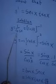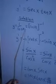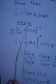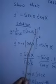1 over cos x can be written as bracket cos x power negative 1. Now, to differentiate y with respect to x, we use the power rule,